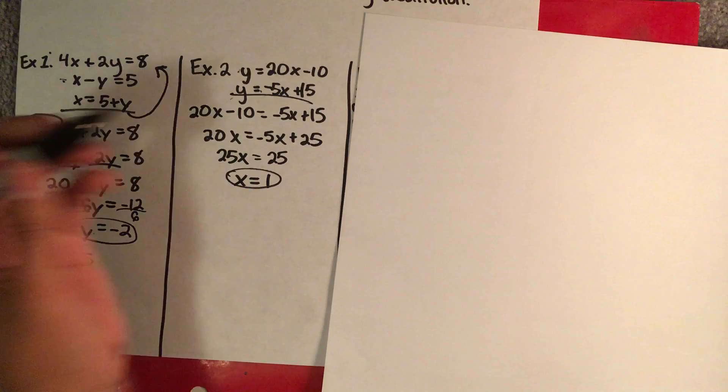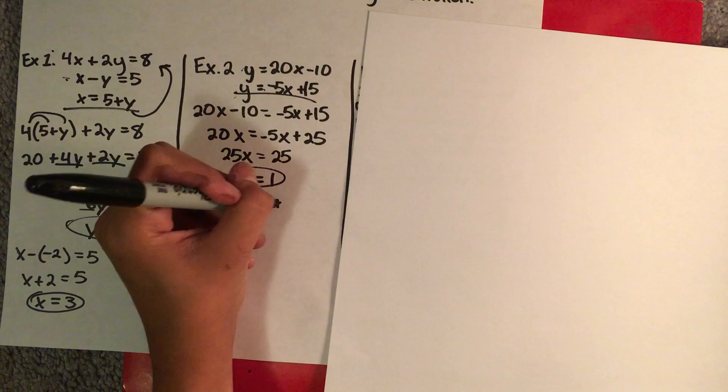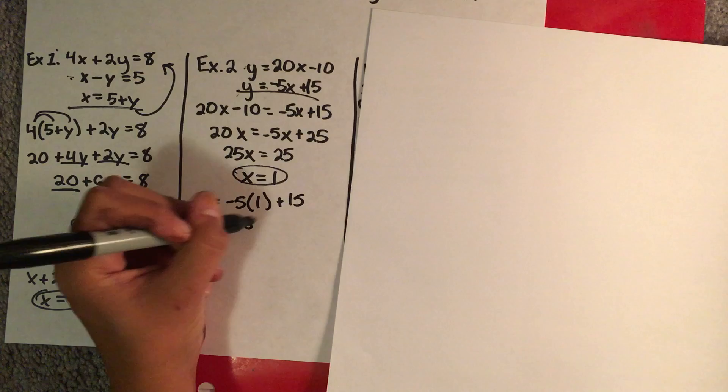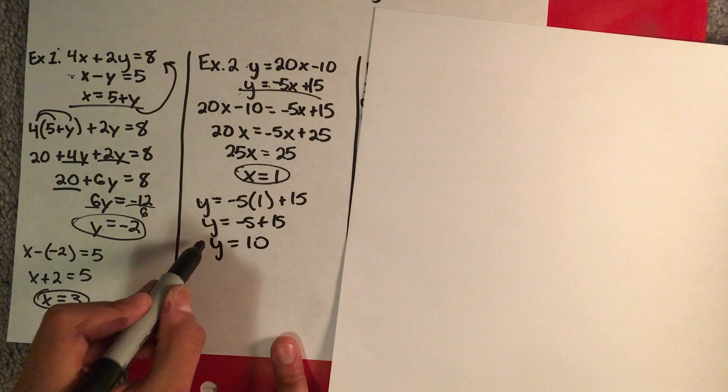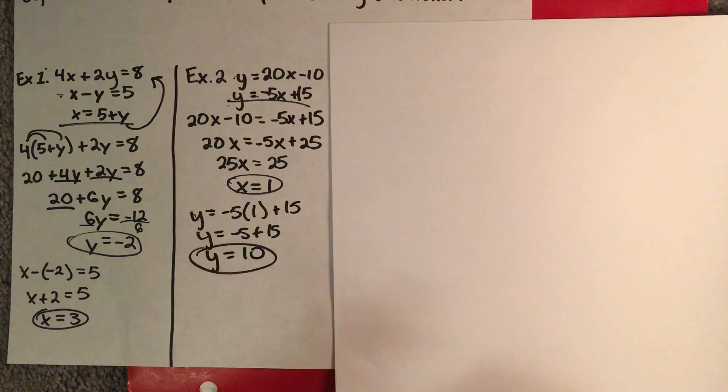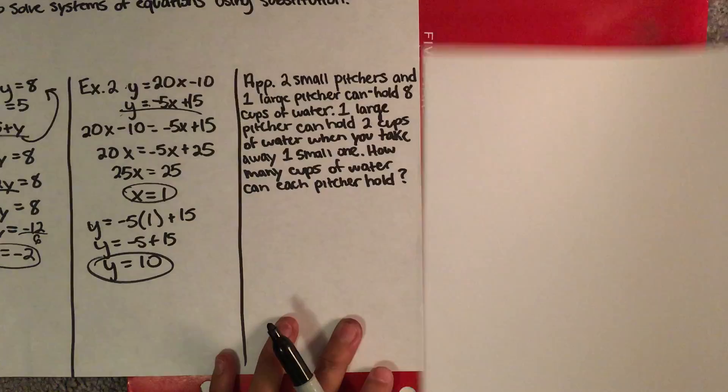You plug your 1 into either one of your original equations. In this case, using the one with lower numbers, you have y is equal to negative 5 times 1 plus 15, so y is equal to negative 5 plus 15. Your y is equal to 10. And that is your second way of using substitution.